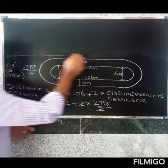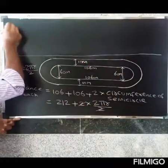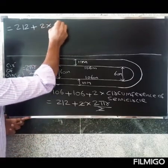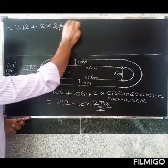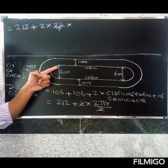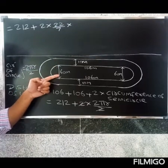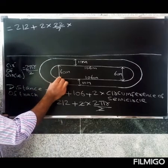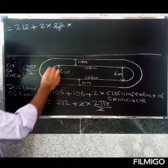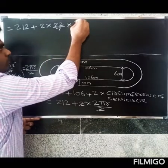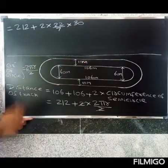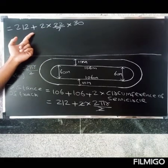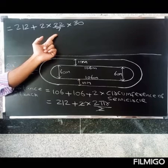So two into 22/7 into radius. The diameter of the inner track is 60 meters, so radius equals 60 divided by 2, which is 30 meters. Let's substitute: 212 plus 2 into 22/7 into 30.